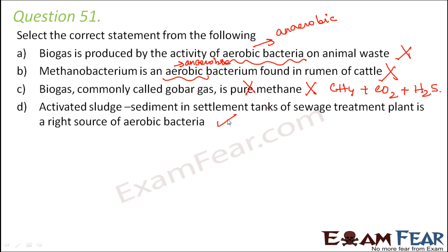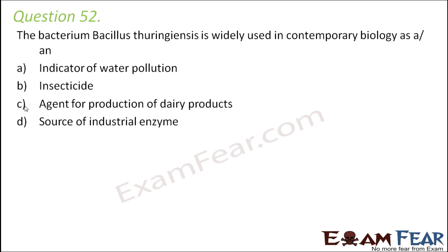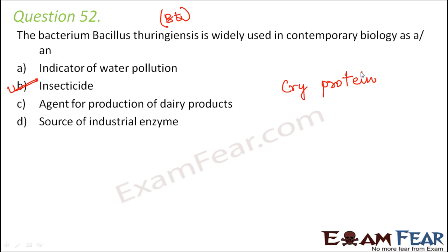(D) Activated sludge sediment in settlement tanks of sewage treatment plant is a rich source of aerobic bacteria — this is correct. Some part of activated sludge is pumped back to the aeration tank, and the remaining part is sent to anaerobic sludge digesters where anaerobic bacteria digest bacteria and fungi in the sludge. So option D is correct. Question number 52: Bacillus thuringiensis (BT) is widely used as an insecticide agent. The spores of this bacterium produce insecticidal Cry protein, which can kill larvae of many insects.